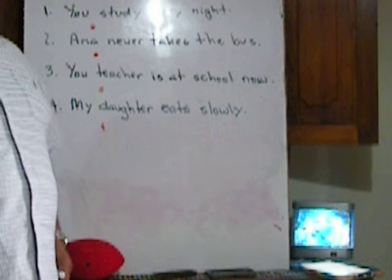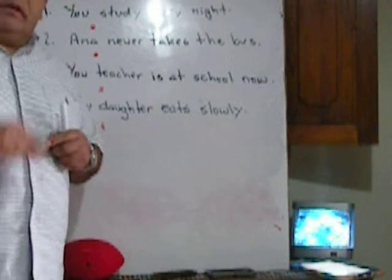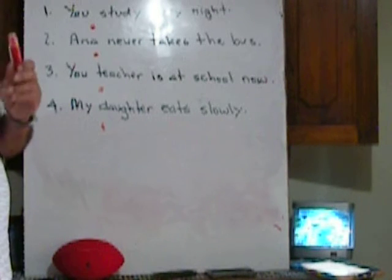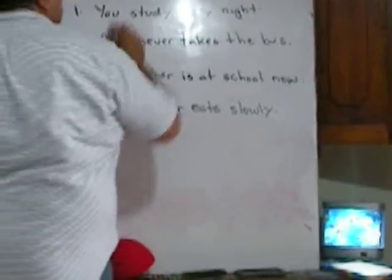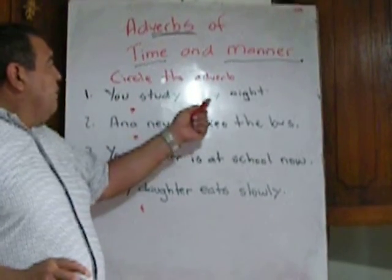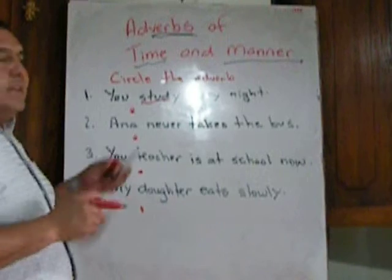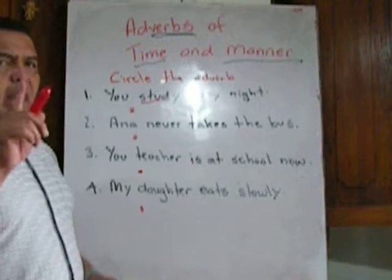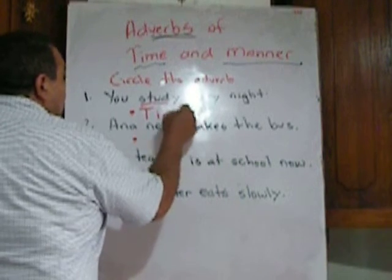I'm going to give you three minutes. Now let's go over the answers. 'You study every night.' First of all, we have to check which one is the verb — 'study' is the verb. What is this sentence telling me? That you study every night. Not how, but when. So this is an adverb of time.